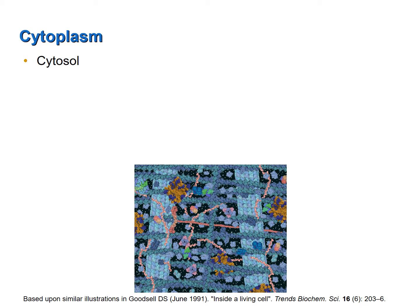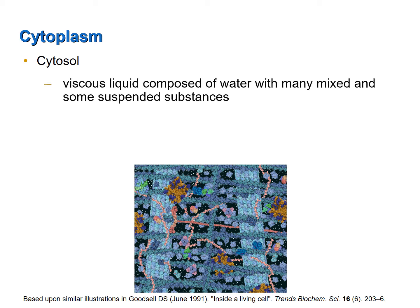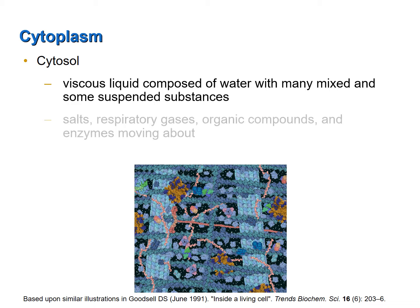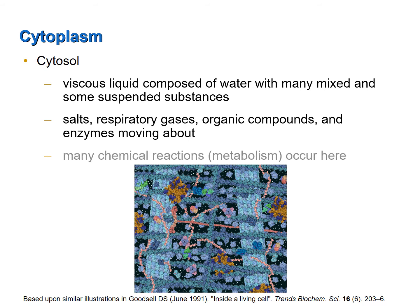The cytosol is a thick, or viscous, liquid composed mainly of water with many substances dissolved and some suspended within it. These substances include salts, respiratory gases such as carbon dioxide and oxygen, organic compounds such as amino acids, proteins, and carbohydrates, as well as enzymes — all moving about and many reacting with one another, contributing significantly to the metabolism of the cell.